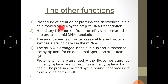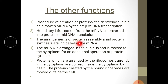The deoxyribonucleic acid makes mRNA by the process of DNA transcription. Hereditary information from the mRNA is converted into proteins during translation, with the help of ribosomes. The mRNA is arranged in the nucleus and is moved to the cytoplasm for protein synthesis. Proteins arranged by ribosomes currently in the cytoplasm are utilized outside the cytoplasm, and proteins created by the bound ribosomes are moved outside the cell.